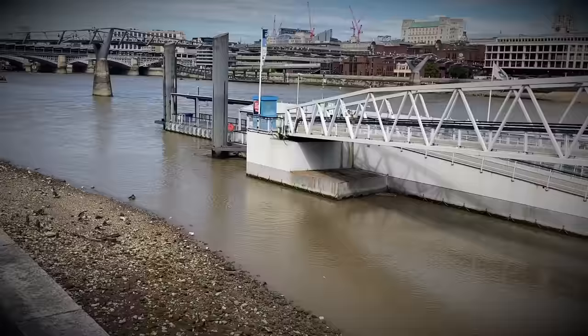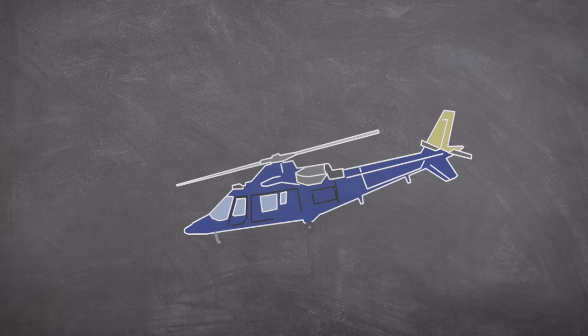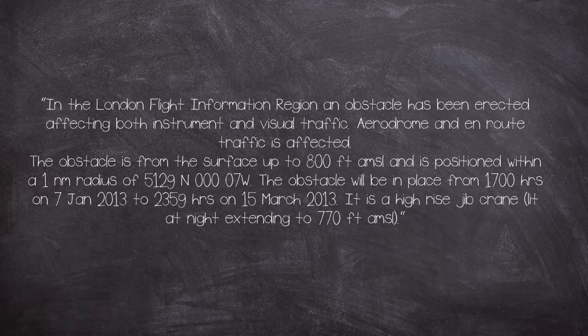To help with navigation around London, a number of routes are predetermined. They are labeled as Hotel then the route's number—say, for example, Hotel 4, which might come into our story a little bit later. The crane at St George's Wharf was subject to a thing called Notice to Airmen. These inform pilots of things to not crash into, and this particular one read: 'In the London Flight Information Region, an obstacle has been erected affecting both instrument and visual traffic. Aerodrome and en route traffic is affected. The obstacle is from the surface up to 800 feet and is positioned within a one nautical mile radius. The obstacle will be in place from 1700 hours on the 7th of January 2013 to 2359 hours on the 15th of March 2013. It is a high-rise jib crane lit at night extending to 770 feet.'